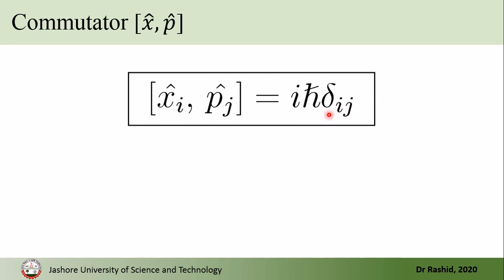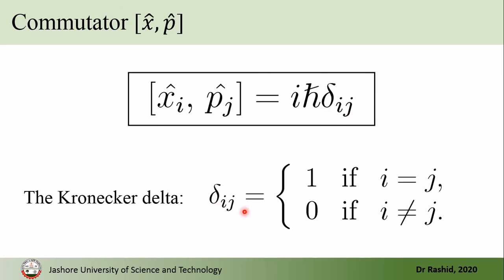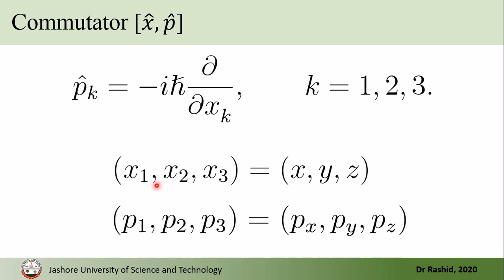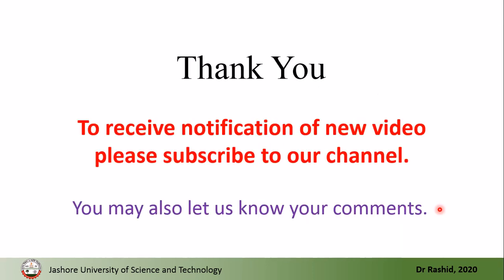All nine commutators can be written compactly using the Kronecker delta, where delta-ij equals 1 if i and j are the same, and 0 if they are different. Here x_1, x_2, x_3 correspond to x, y, z, and p_1, p_2, p_3 correspond to p_x, p_y, p_z. So p_1 means minus iℏ d/dx_1, that is minus iℏ d/dx. That is all for today, thank you.